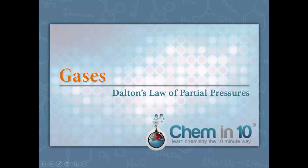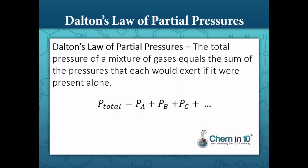Dalton's Law of Partial Pressures says that the total pressure of a mixture of gases equals the sum of the pressures that each would exert if it were present alone. The equation is: total pressure equals the pressure of gas A if it were present alone, plus the pressure of gas B if it were present alone, plus the pressure of gas C, et cetera.